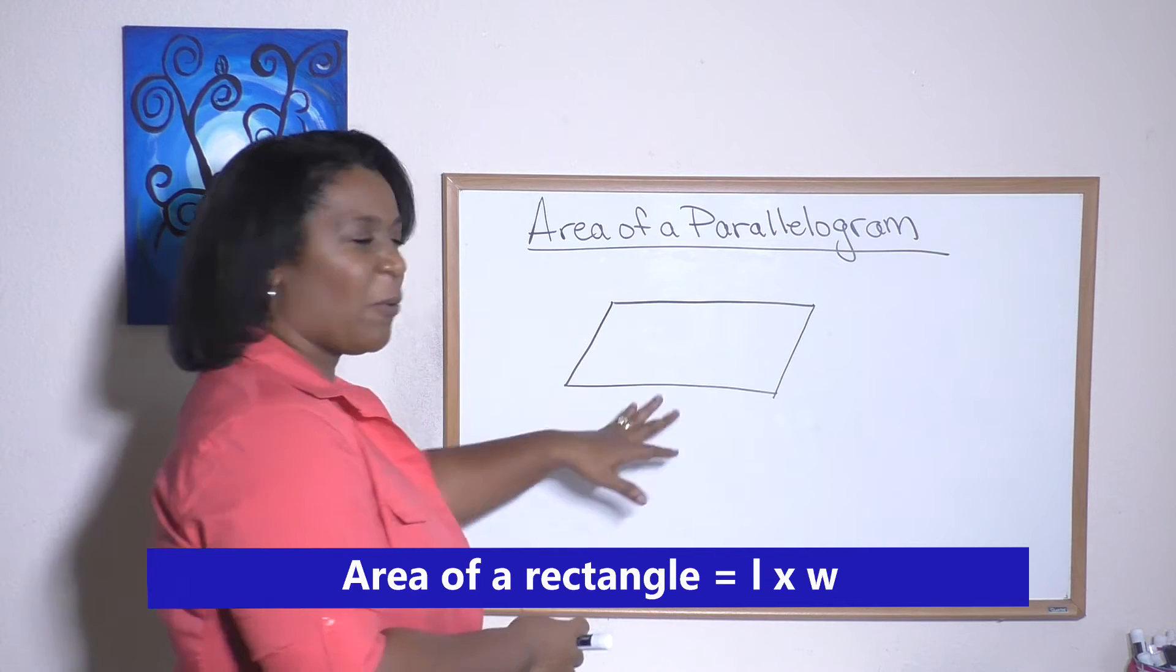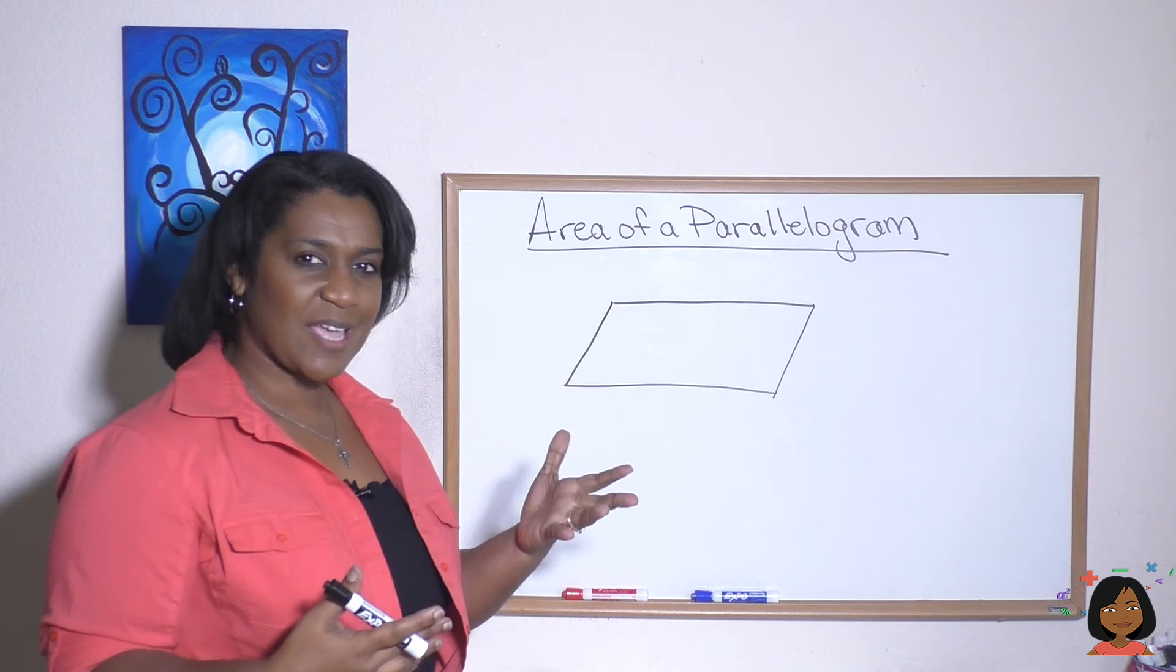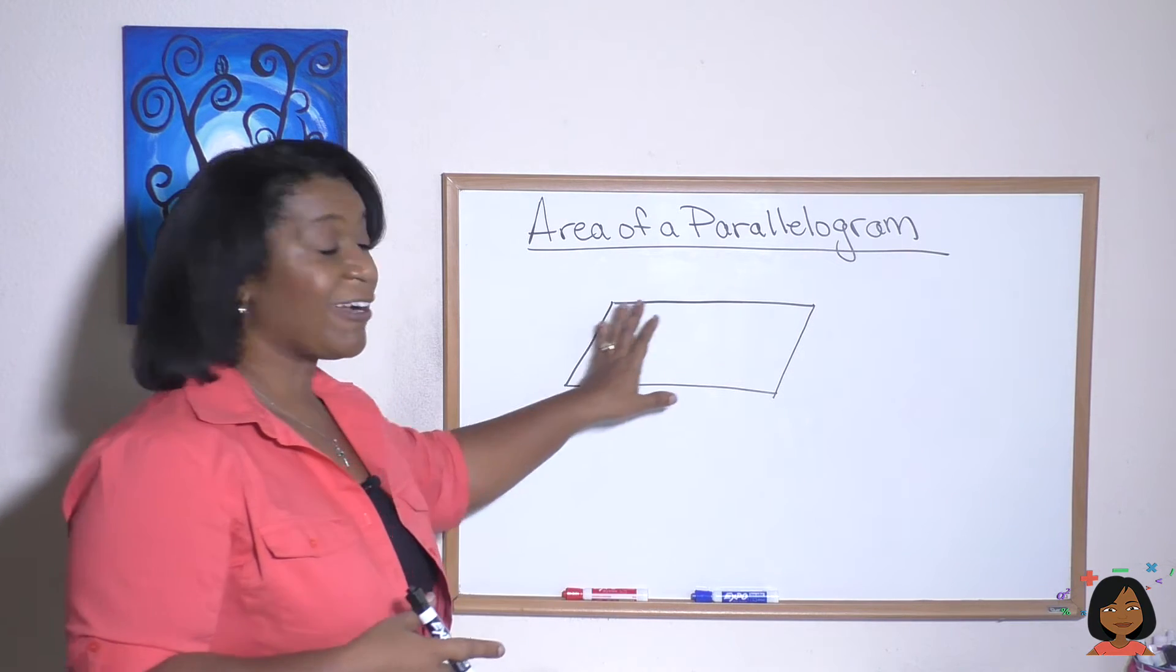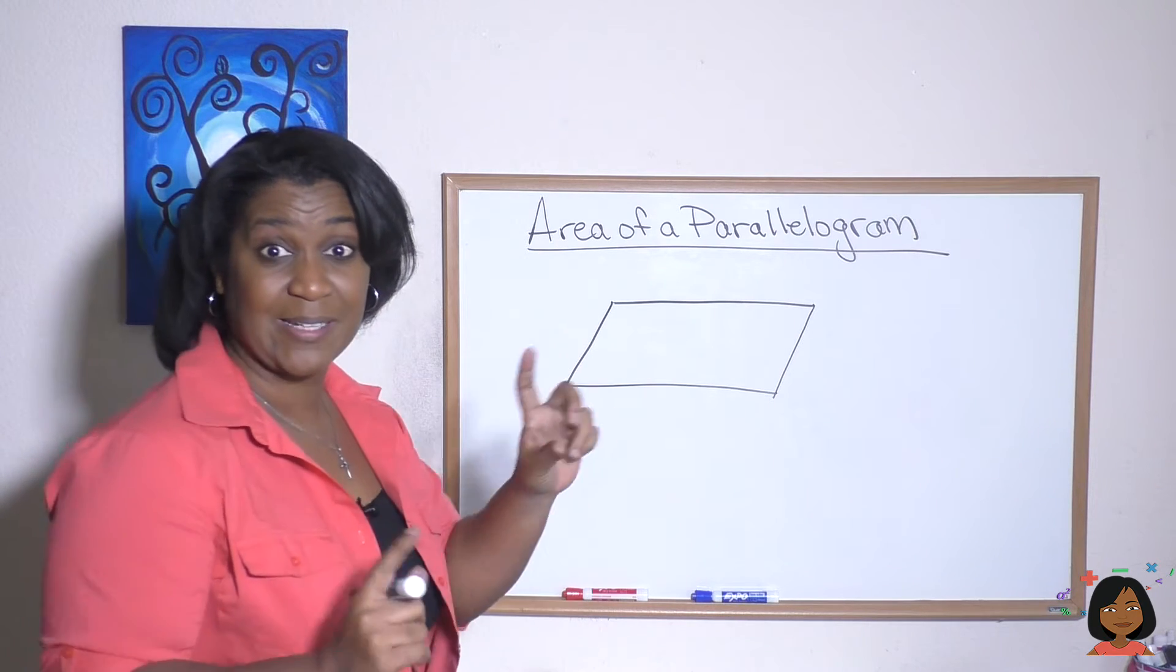Well here we have a parallelogram. You might also remember that a rectangle is a kind of parallelogram. Parallelogram just means it has two sets of parallel sides. A rectangle has that but it has 90 degree angles.